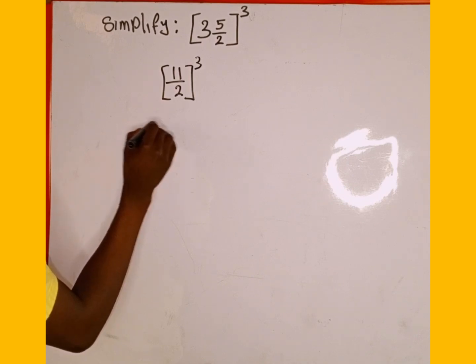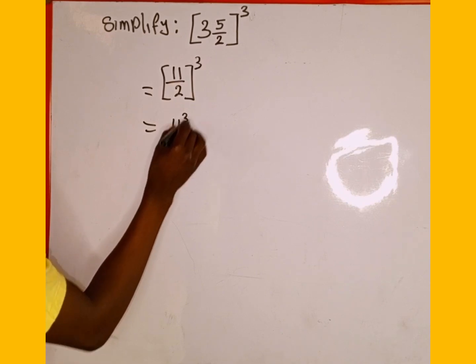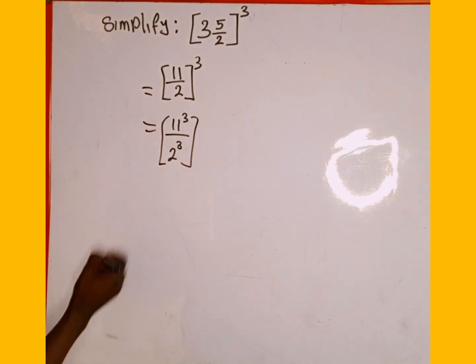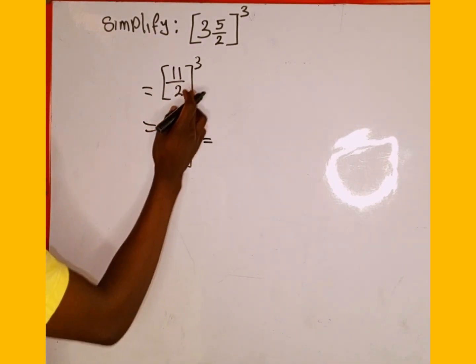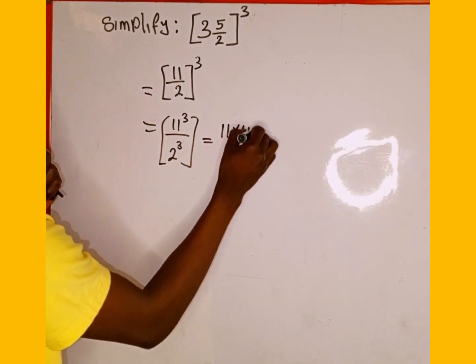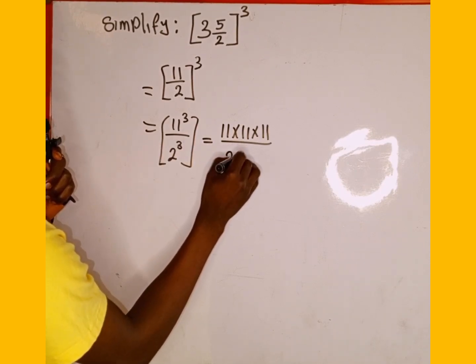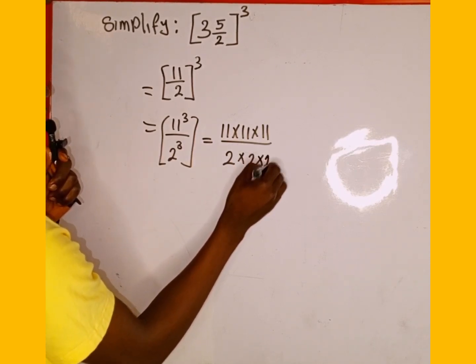So this is going to be equal to 11 to the power of 3 divided by 2 to the power of 3. So they can share the power, which is also equal to 11 to the power of 3, which implies 11 multiplied by 11 multiplied by 11. And also 2 to the power of 3 is 2 multiplied by 2 multiplied by 2.